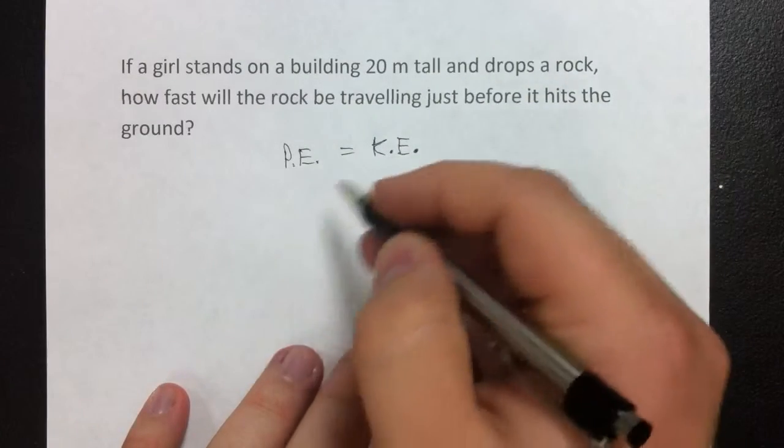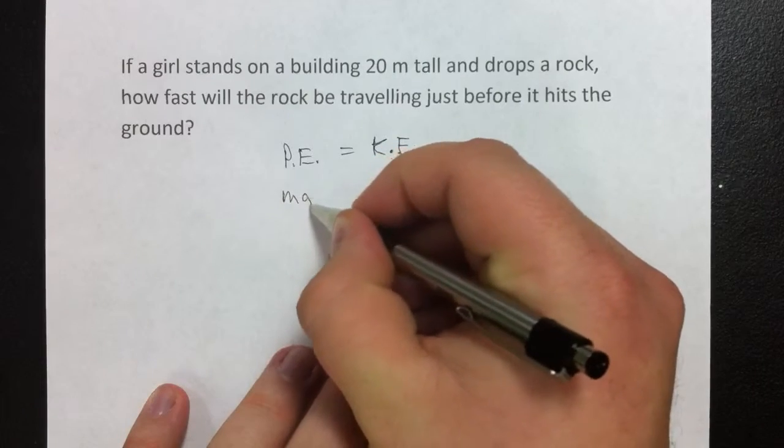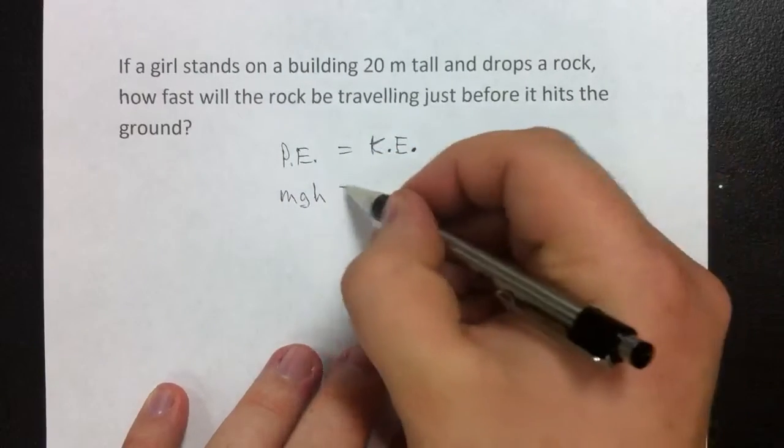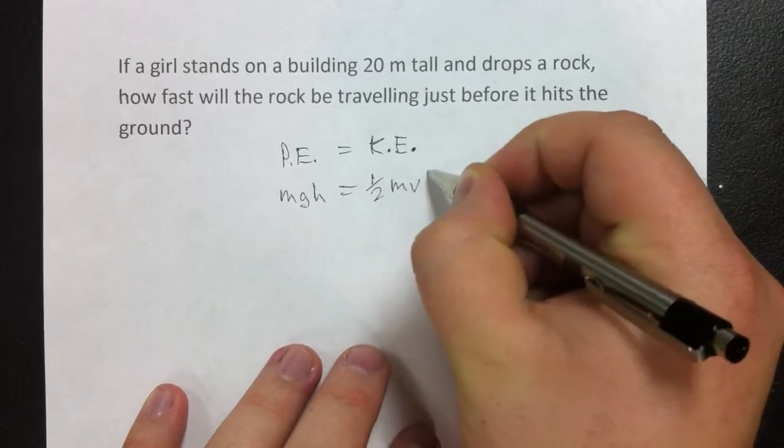Potential energy, whenever we're dealing with something at a height, is equal to mass times gravity times height. And kinetic energy is always equal to one-half mass times velocity squared.